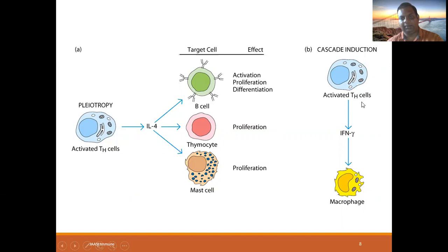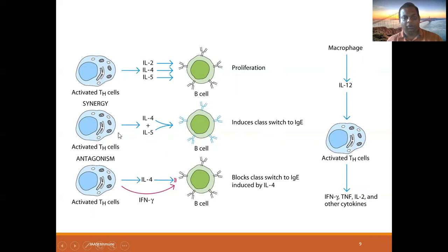An example of cascading: interferon-gamma is secreted, which in turn activates macrophages. Like interleukin-2 and interferon-gamma by NK cells and macrophages, and interleukin-18 likewise — it cascades sequentially.